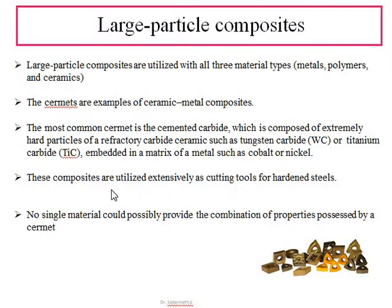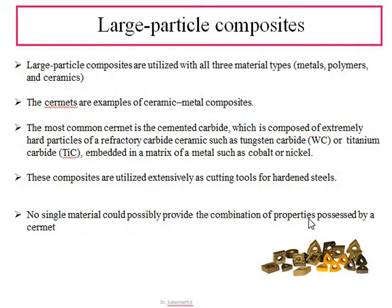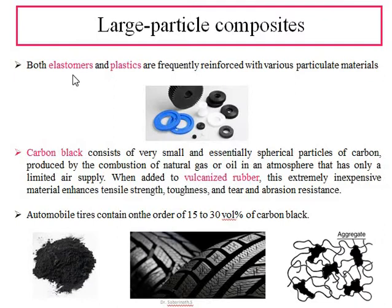Cermet carbide is widely used in the cutting tool industry. It is made of extremely hard particles of refractory carbide ceramics such as tungsten carbide or titanium carbide, embedded in a metal matrix such as cobalt or nickel. No single material — whether a ceramic or metal alone — could provide the combination of properties that cermets offer.